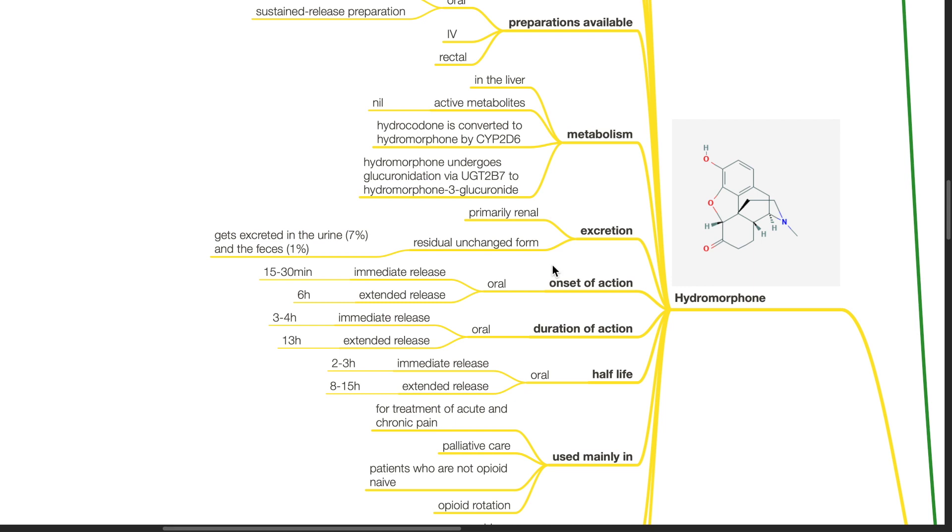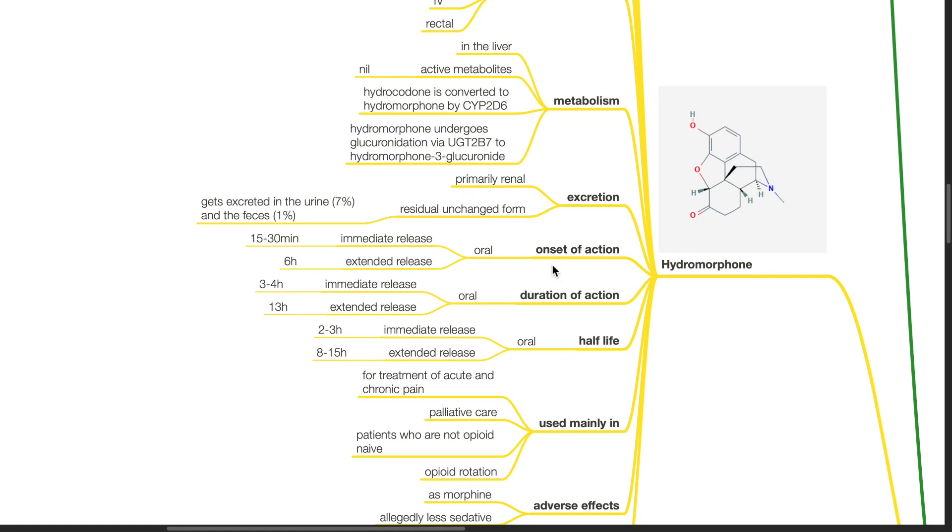Onset of action for oral immediate release is 15 to 30 minutes. Extended release oral formulation, 6 hours. Duration of action for immediate release oral preparation is 3 to 4 hours. Extended release oral preparation is 13 hours. Half-life for oral immediate release formulation is 2 to 3 hours. For extended release oral formulation, half-life is 8 to 15 hours.